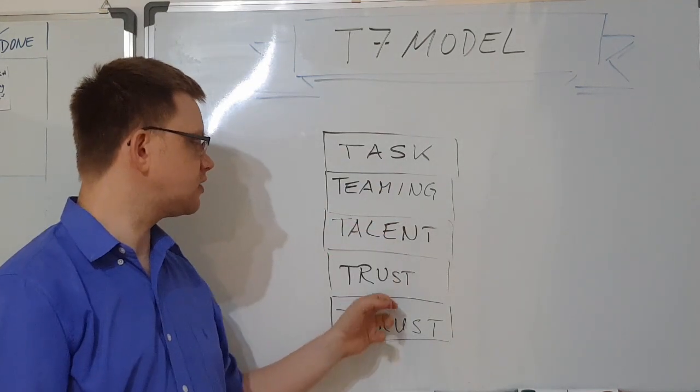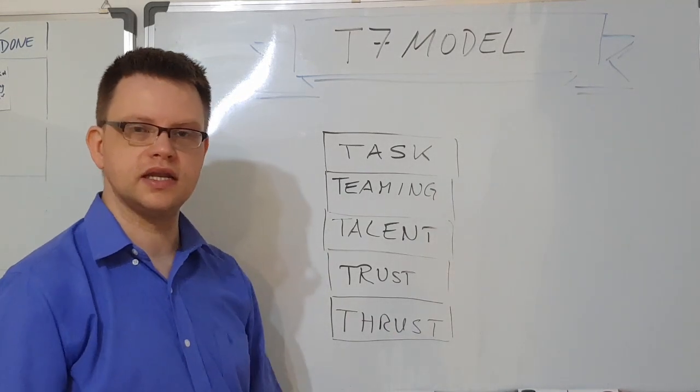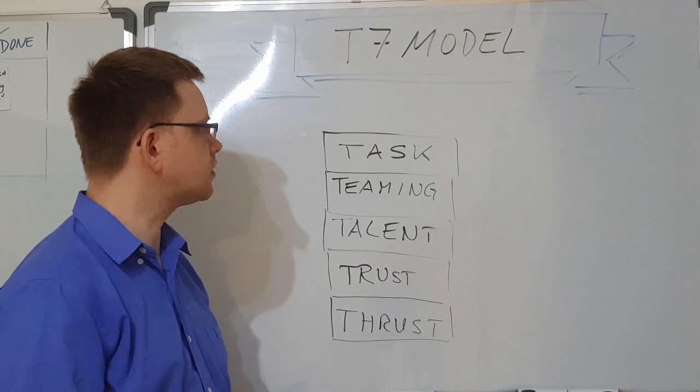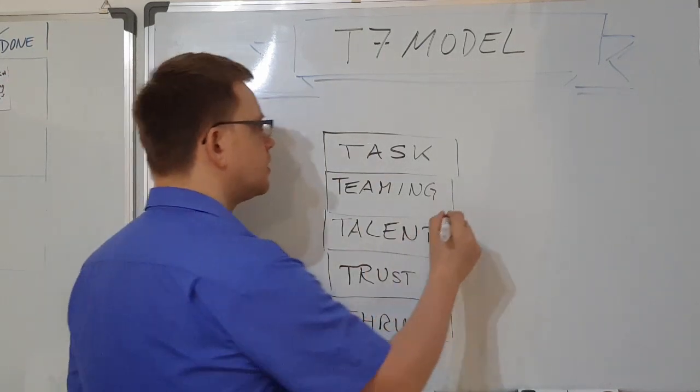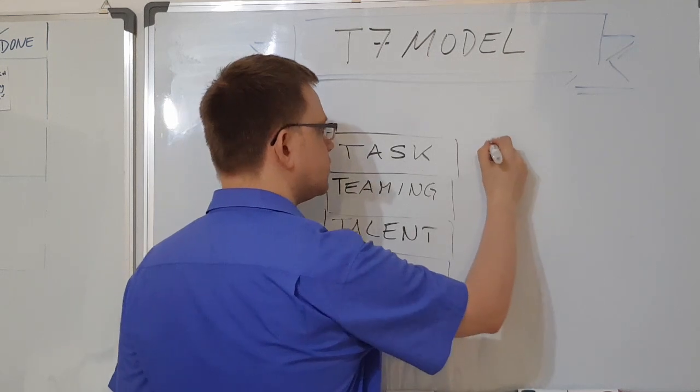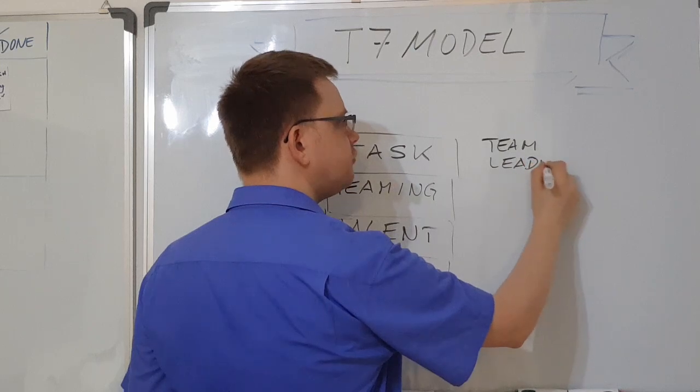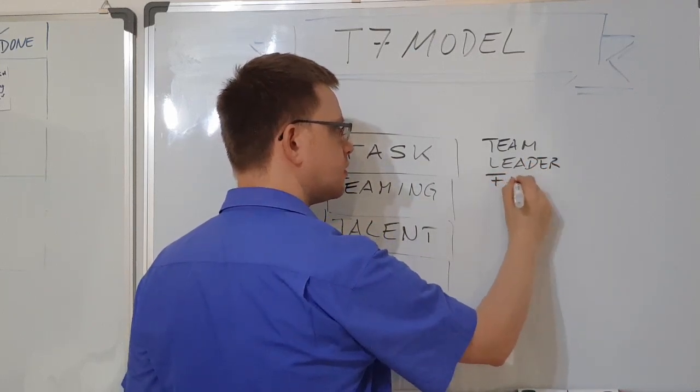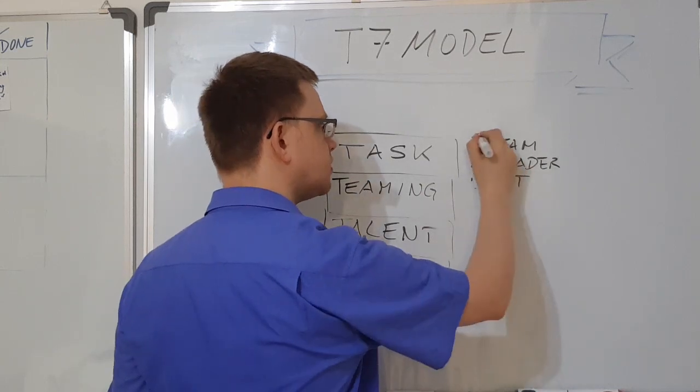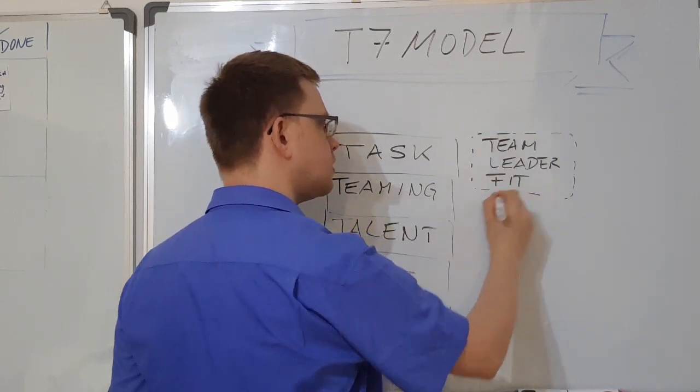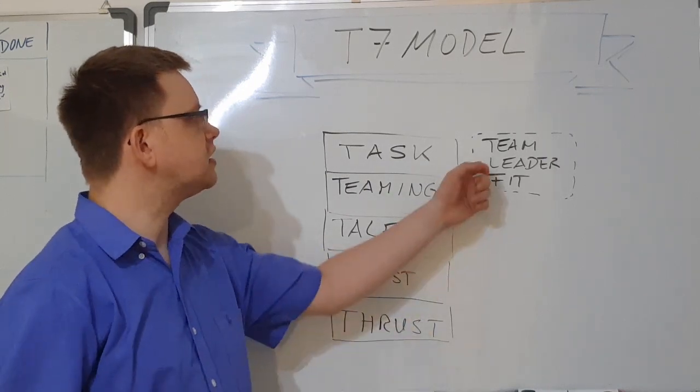Those five things are basically at the core of the T7 model, and then we get to the surrounding things, and that is what they call team leader fit, or I might just be calling this leadership.